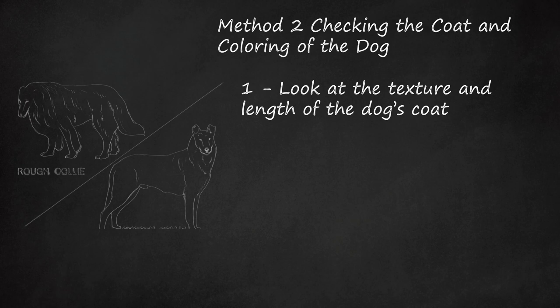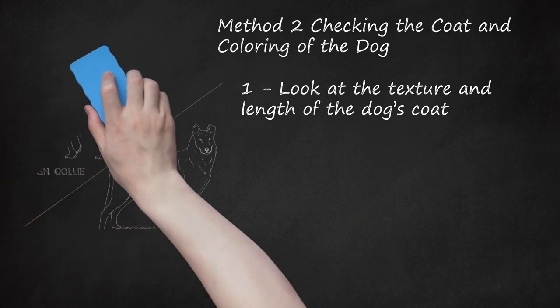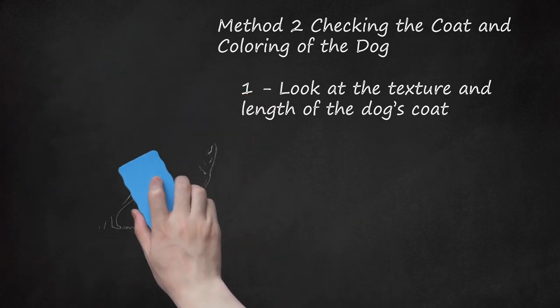Both varieties have a soft, profuse undercoat. Keep in mind in the United States, many breeders will cross the two varieties together. But in England, the two varieties are considered separate breeds and cannot be interbred.